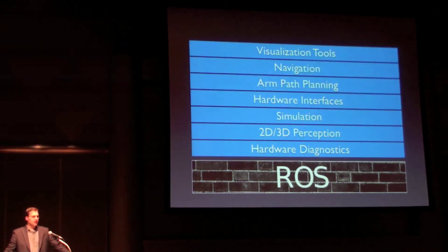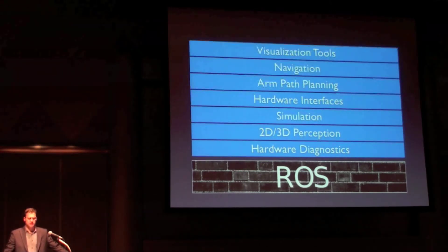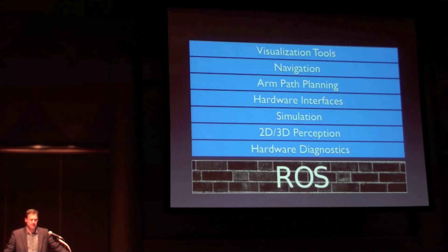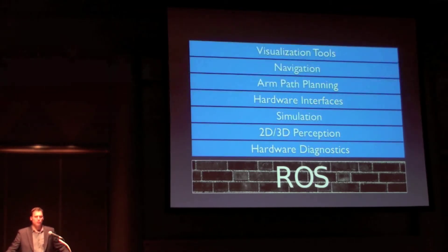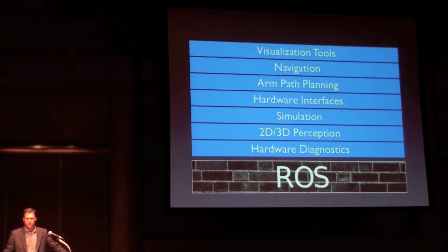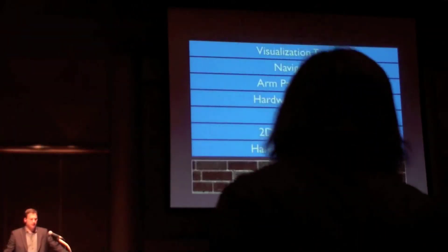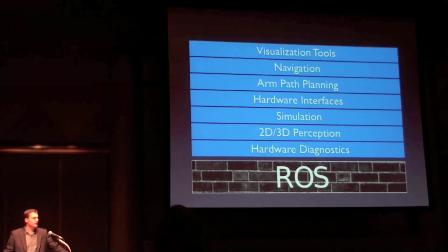Mobile manipulation systems require a broad set of capabilities that Ross provides. Here are a few of those capabilities that exist today: visualization tools for visualizing sensor information and robot state; a navigation stack that can plan and navigate around 3D obstacles; and arm path planning libraries for 3D planning of robot arm motions.